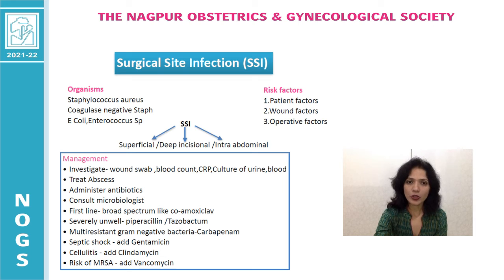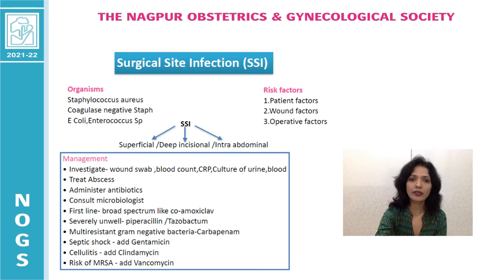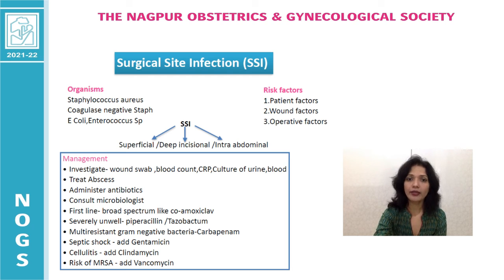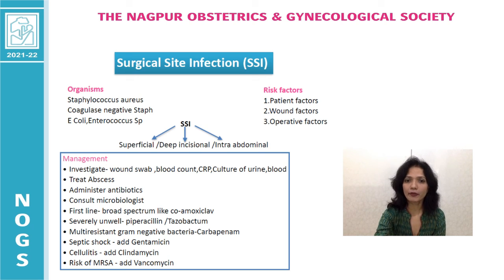In case of septic shock, add IV gentamicin. For cellulitis, we can give clindamycin. When there is a risk of MRSA infection, add a glycopeptide such as vancomycin. This should take care of all the post-operative wound infections. Thank you very much.